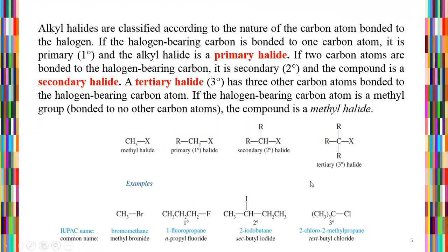These structures are categorized according to primary, secondary, and tertiary halide systems, with exact examples using IUPAC names and nomenclature. The first is bromomethane, common name methyl bromide; 1-fluoropropane and propyl fluoride; 2-iodobutane, secondary butyl iodide; and 2-chloro-2-methylpropane, which is tertiary butyl chloride.